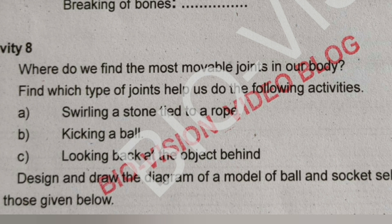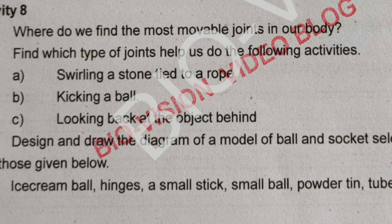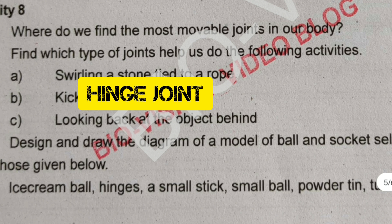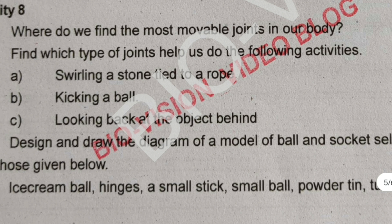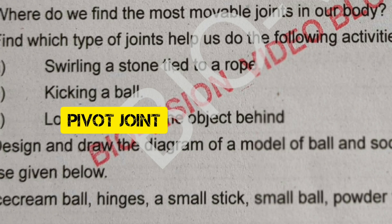Activity 8, Question A: Where do we find the most movable joints in our body? The answer is the shoulder joint and hip joint. Which type of joint helps us swirl a stone tied to a rope? The answer is the ball-and-socket joint. Kicking a ball uses a hinge joint. Looking back at an object behind uses the pivot joint.